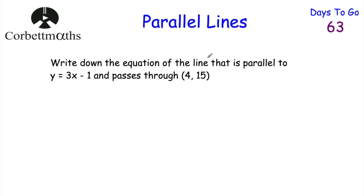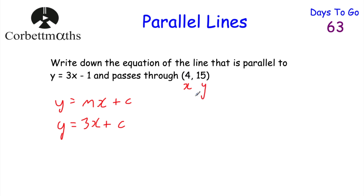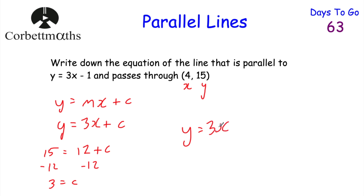This time we're asked to write down the equation of a line that's parallel to y equals 3x minus 1 and passes through the point (4, 15). It will be y equals 3x plus c since the gradient is 3. Substituting x equals 4 and y equals 15: 15 equals 3 times 4 plus c, so 15 equals 12 plus c. Taking away 12 from both sides gives c equals 3. So the equation is y equals 3x plus 3.